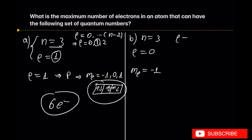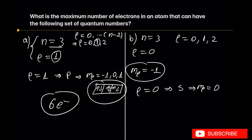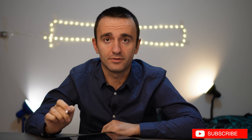Let's move to the second example: n equal to 3, which means l is going to be 0, 1, and 2. Now with ML equal to minus 1 specified: l equal to 0 represents s orbital, which has ML equal to 0 only — ML equal to minus 1 is not included in l equal to 0. This means the total number of electrons contained in this set is 0. It is not possible to place electrons in this set of quantum numbers.